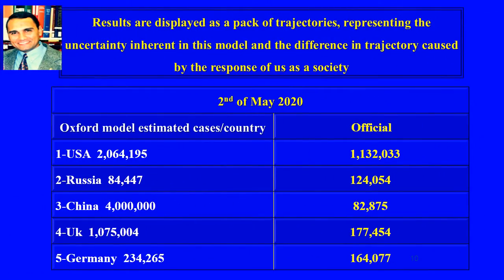Results are displayed as a pack of trajectories representing the uncertainty inherent in the model and the difference in trajectory caused by the response of society. This model expected that on May 2nd, 2020, the USA would have around 2 million people infected, but the official number was about 1,132,000 — lower by about 1 million than the Oxford model estimated. For Russia on the same day, the model expected 84,000 infected people, but the official number was higher at about 124,000.